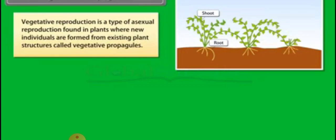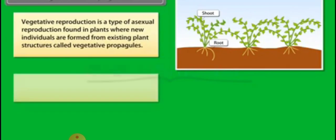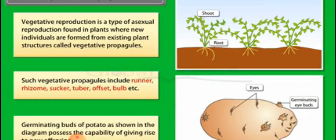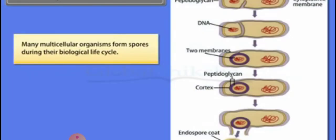Vegetative propagation is the other method of asexual reproduction wherein plants reproduce through formation of vegetative propagules. The various vegetative propagules include runner, rhizomes, suckers, tuber, offset, bulb. In case of a potato, we can see that there is the formation of eyes, they are referred to as the nodes which is the meristematic part which when put in soil can give rise to a new plant.